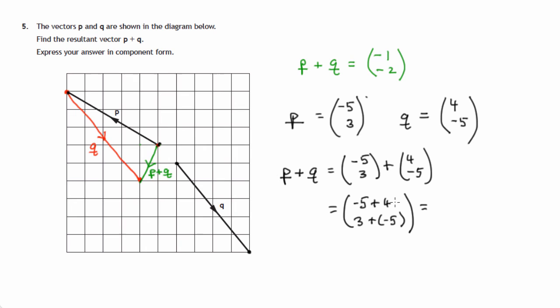So negative 5 plus 4, think of a number line, you go 5 to the left and back 4. You've ended up at minus 1, negative 1. And then 3 to the right plus 5 to the left, you'll end up at negative 2. 3 plus negative 5 is like 3 minus 5, is negative 2.